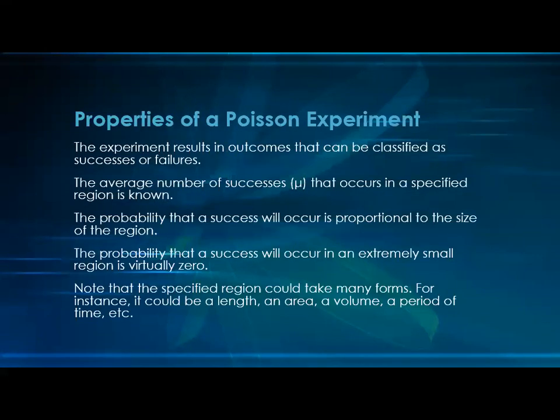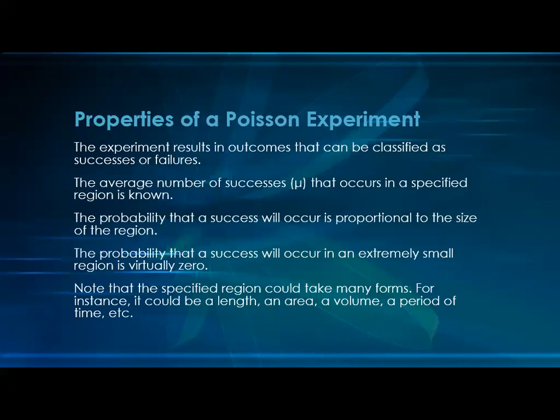Properties of a Poisson experiment: the experiment results in outcomes that can be classified as success or failure, same as binomial. The average number of successes, mu, that occurs in a specified region is known. The region can be a space, a day, or some length. The probability that a success will occur is proportional to the size of the region, and the probability that a success will occur in an extremely small region is virtually zero. The specified region could take many forms: length, area, volume, or period of time.